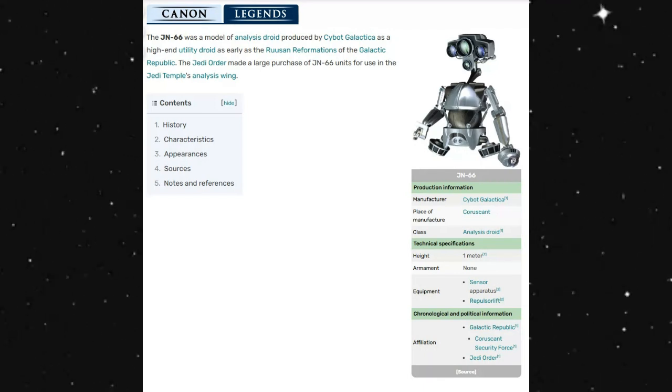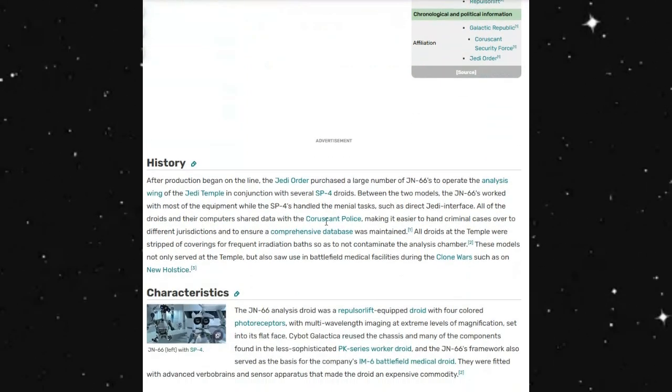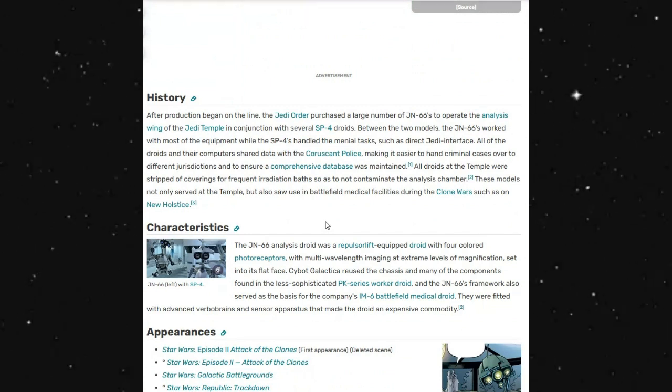As early as the Rasuan Reformations of the Galactic Republic, the Jedi Order made a large purchase of JN-66 units for use in the Jedi Temple's Analysis Wing. After production began on the line, the Jedi Order purchased a large number of JN-66 to operate the Analysis Wing of the Jedi Temple in conjunction with several SP-4 droids.